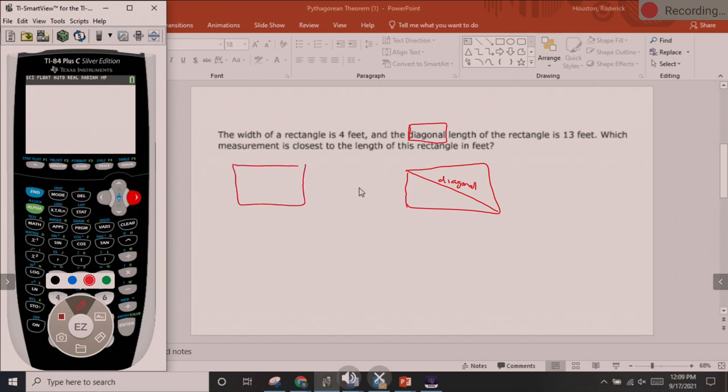In this example, we have a width of 4 feet and the diagonal length is 13 feet. It says which measurement is closest to the length. So we have to find that length, and we can use the Pythagorean Theorem to do so.